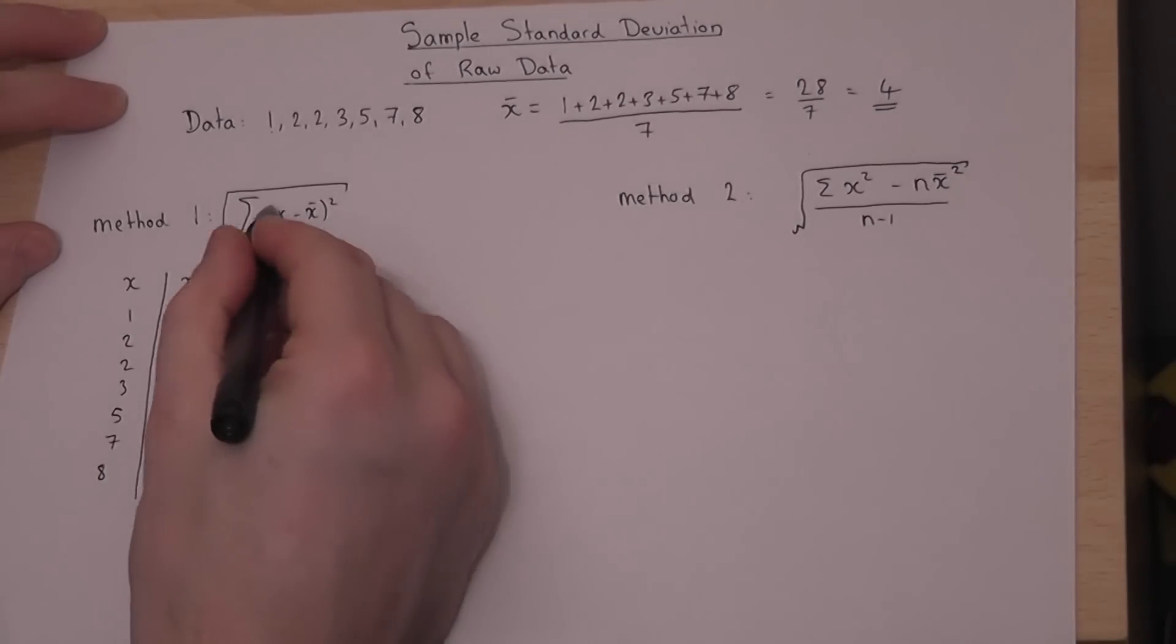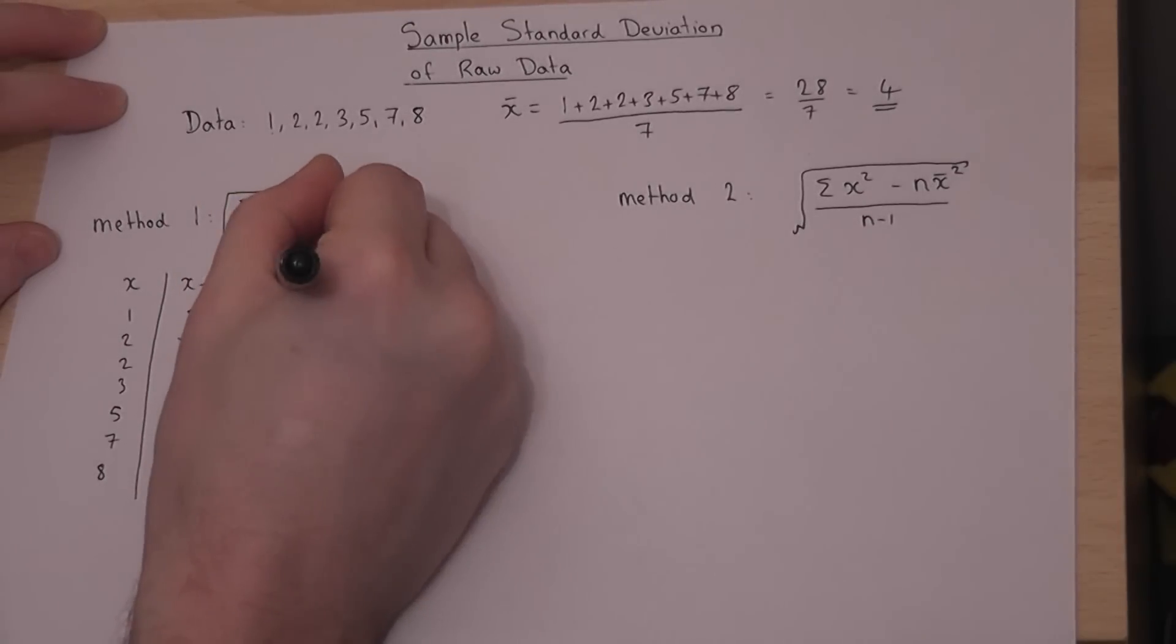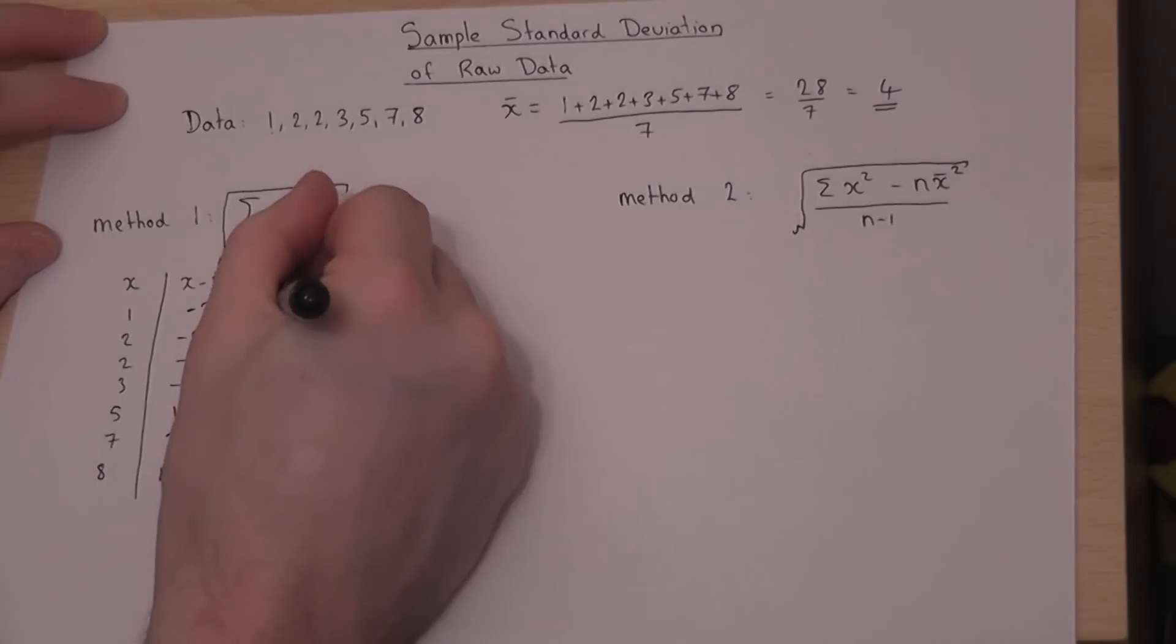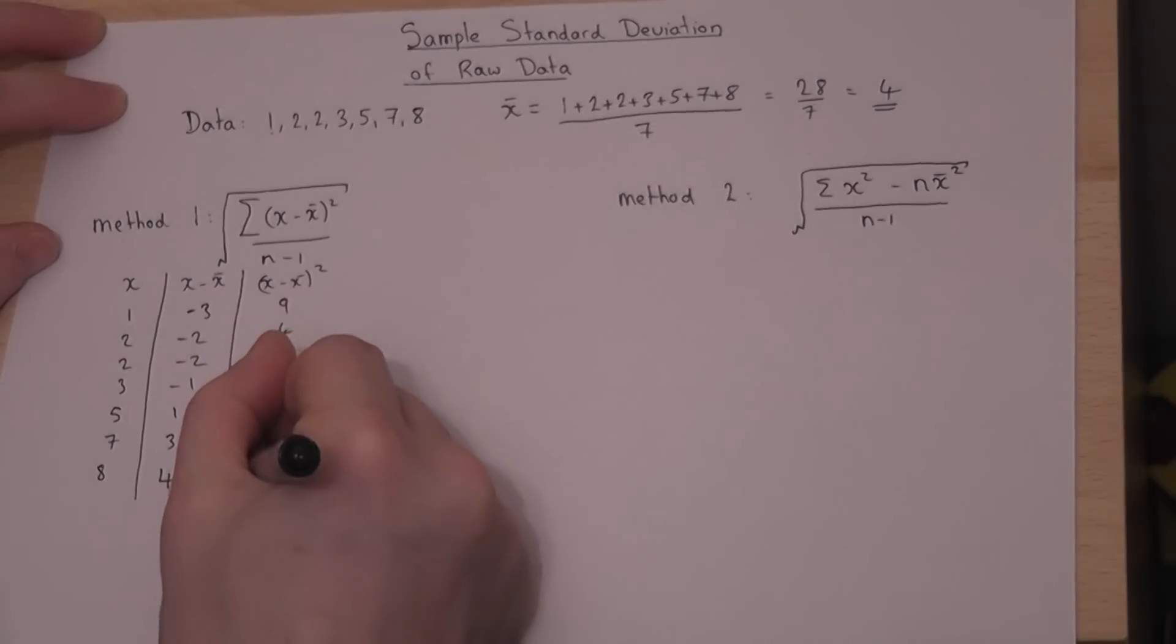Having found the difference, I then have to square. So, x minus x-bar squared. So I have to square these values. So that's 9, 4, 4, 1, 1, 9, 16.